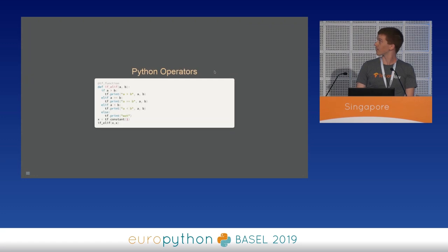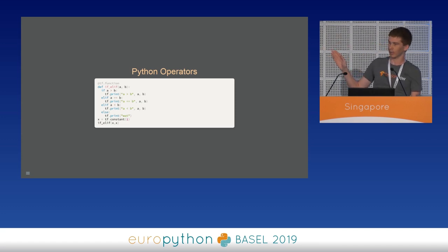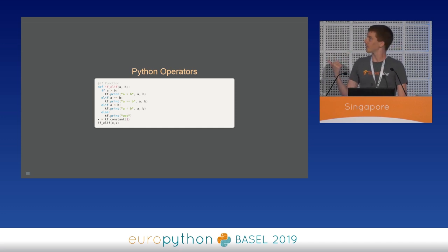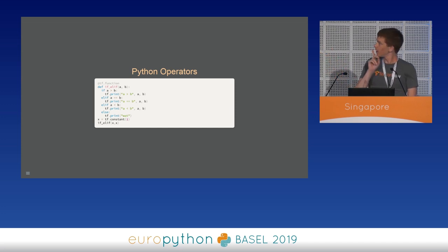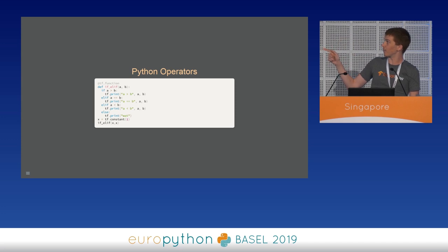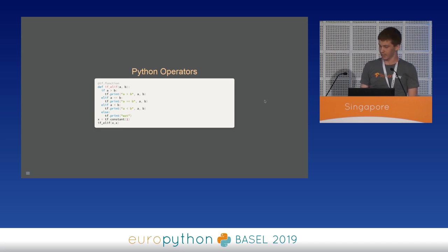This brings us to the last part of the presentation. What happens when we plug a Python operator inside a TF function? This function works correctly in eager mode. Given a tf.Tensor x holding the constant value of 1, we expect to get the output 'A equal B', since A and B are the same Python object. Everyone here should agree that the final else should never be reached, because if we feed a number, every condition should be satisfied. But in practice, if we execute this function, this is the output.